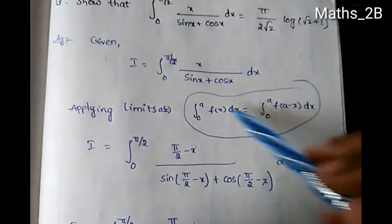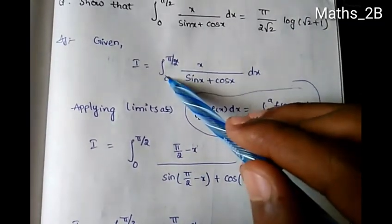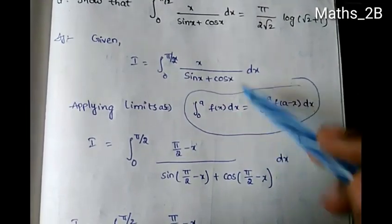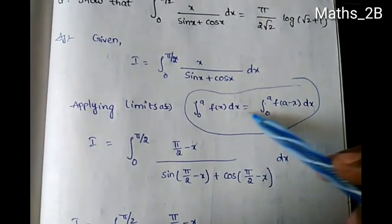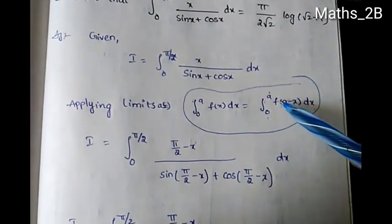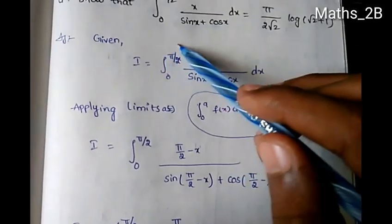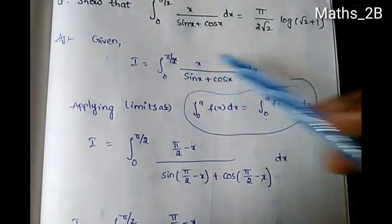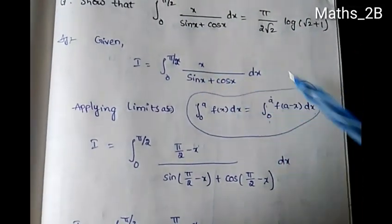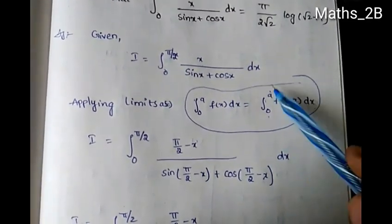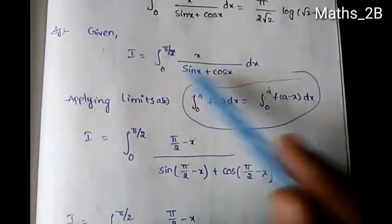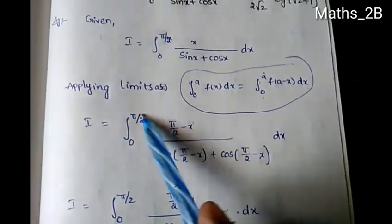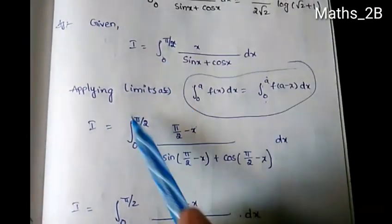So here we have integration 0 to a. We have lower limit zero and upper limit a. f(x) dx equals integration 0 to a of f(a minus x) dx. This is the formula we will apply.